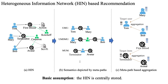Most HIN-based recommendations leverage Metapath-based semantics to learn effective user and item representations. They aggregate node embeddings along Metapaths to fuse different semantics, known as Metapath-based neighbor aggregation, providing a more flexible framework for HIN-based recommendations.